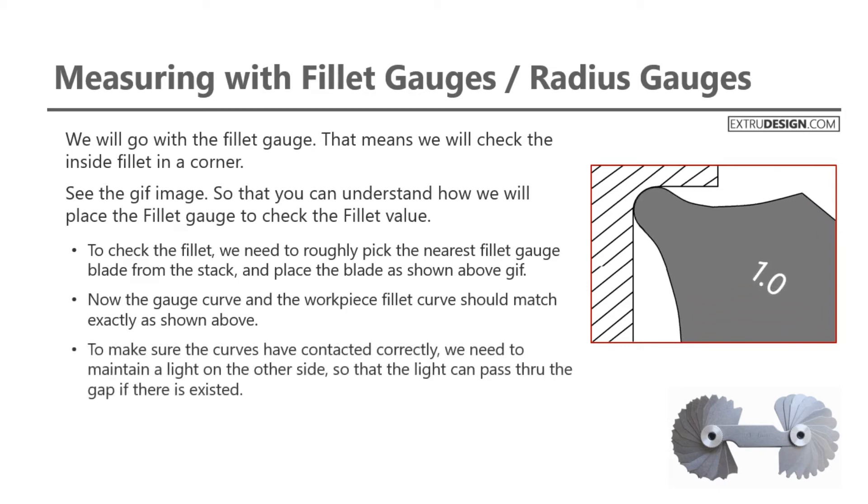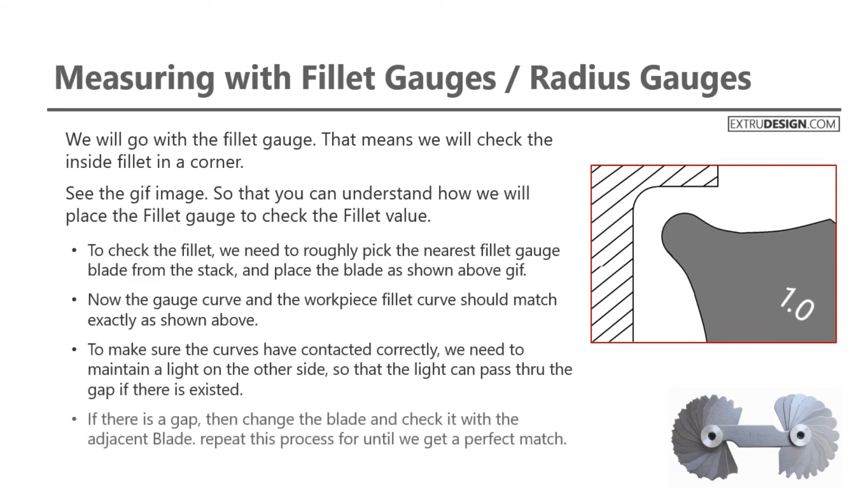To make sure the curves have contacted correctly, we need to maintain a light on the other side. So that the light can pass through the gap if there is a gap, then change the blade and check it with the adjacent blade. Repeat this process until we get a perfect match.